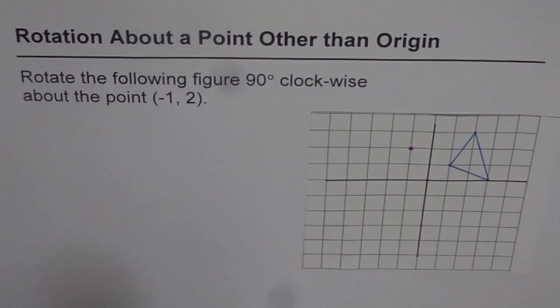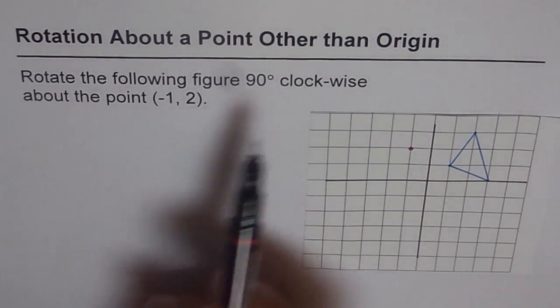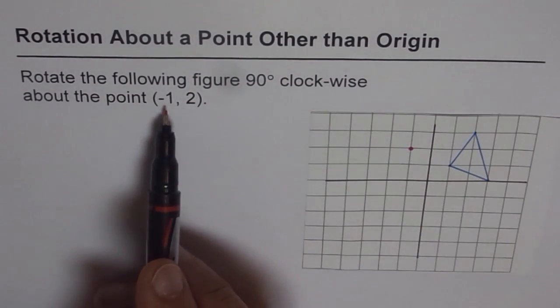So the question before us is, rotate the following figure 90 degrees clockwise about the point (-1, 2).